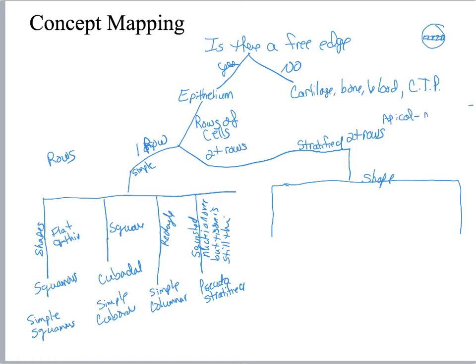With stratified, basically the apical layer is where you get the name. The basal layer is where it's going to go through mitosis and those all tend to be cuboidal or columnar in shape. So we are looking at apical row shape.